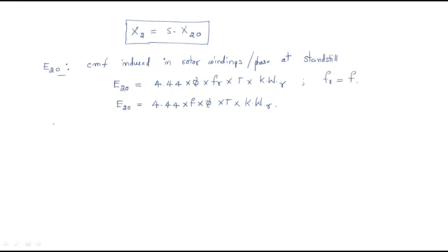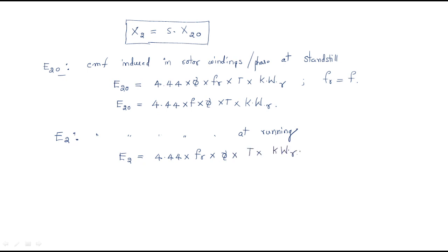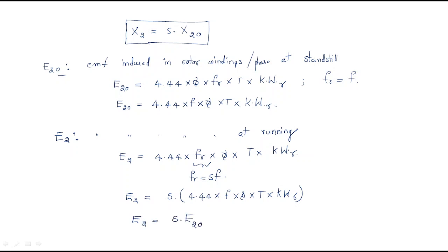E2 is the EMF induced in rotor windings per phase at running condition. We write E2 = 4.44 × Fᴿ × φ × N × Kwr. Since Fᴿ = s × F, factoring out slip gives E2 = s × (4.44 × F × φ × N × Kwr). Therefore, the final relation is: E2 = s × E2₀.